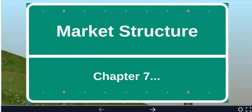We are in chapter 7, which is all about market structures. There are three sections: first, perfect competition and monopoly; then monopolistic competition and oligopoly; and finally, antitrust regulation and competition.